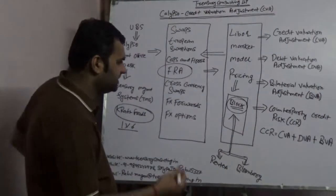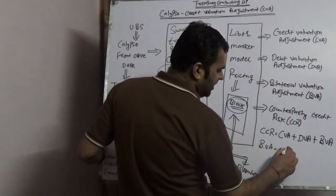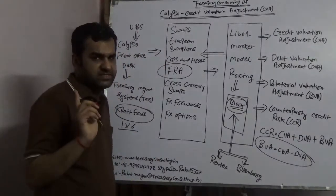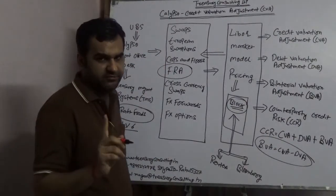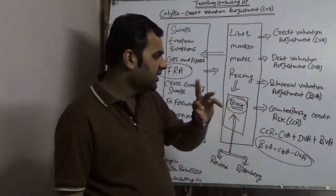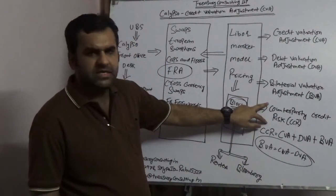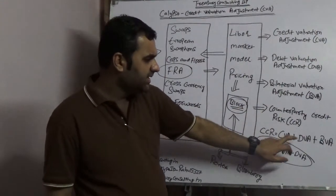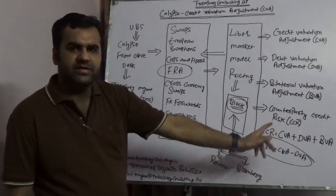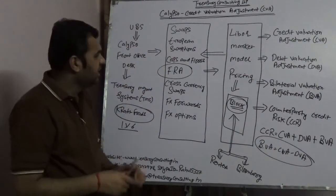CVA is what would happen if Kraft defaults. DVA is what would happen if UBS itself defaults. BVA, bilateral valuation adjustment, is CVA minus DVA. Don't think this is net of cost—there is a reason. The last is counterparty credit risk, which is the sum of CVA plus DVA plus BVA. Everything is captured using Calypso front office desk with the LMM model.